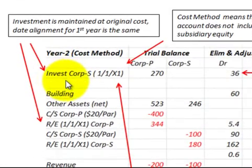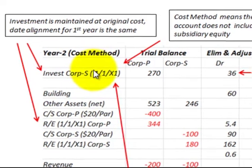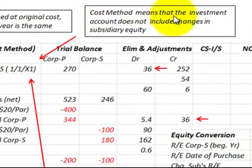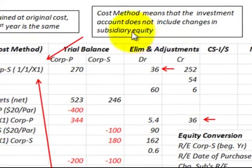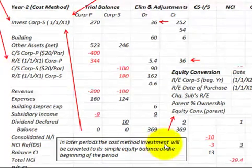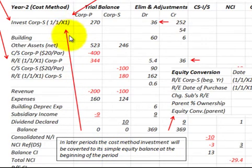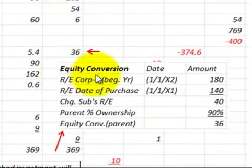In summary, the investment account is maintained at its original cost under the cost method. For year one, the date of alignment is the same for both the equity and the investment account, so no changes are needed. The cost method means the investment account does not include any changes in the subsidiary's equity. In later periods, however, this cost method investment will be converted to a simple equity balance at the beginning of the period through an equity conversion adjustment.